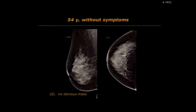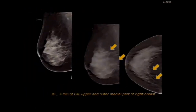This is a case of a 54-year-old patient without any symptoms. On 2D mammography, no obvious mass. On the MLO view, we can imagine many different architectural distortion zones, but on CC view we are not sure there is anything. When we perform 3D mammography, we notice two stellate lesions, one in the upper and another in the outer medial part of the right breast.